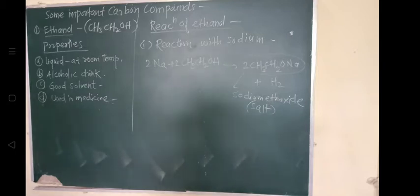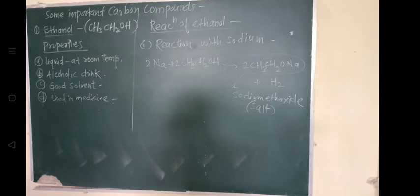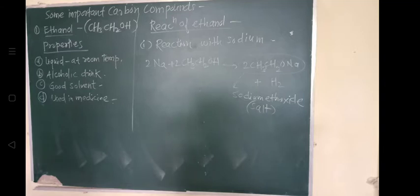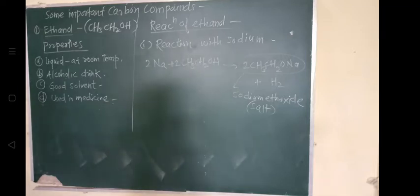With ethanol, the products are sodium ethoxide and hydrogen gas. Can you recall which other substances produce hydrogen on reacting with metals? It is acids. When acids react with metals they give rise to liberation of hydrogen gas — we have studied this in the chapter on metals and non-metals.